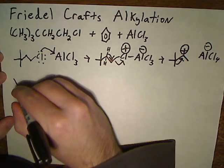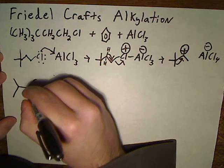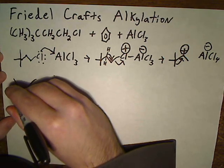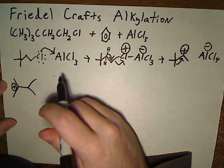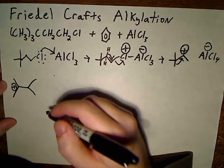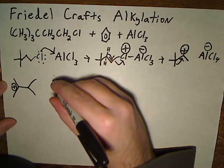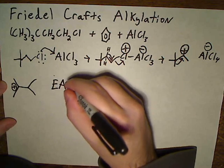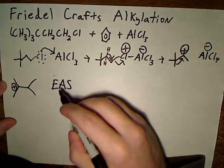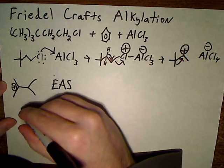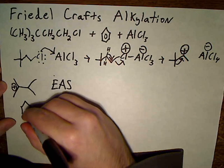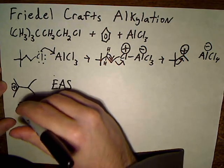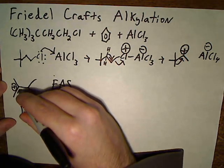So we finally get our rearranged and stabilized product in which we have a tertiary carbocation, and then the rest of the reaction is just a standard EAS reaction, an electrophilic aromatic substitution in which we have our benzene act as a nucleophile and this pi bond comes in.